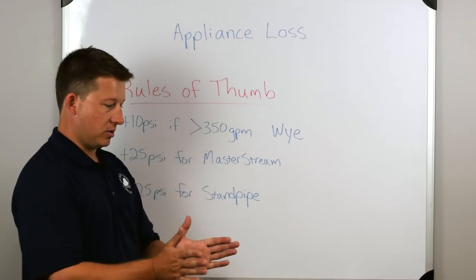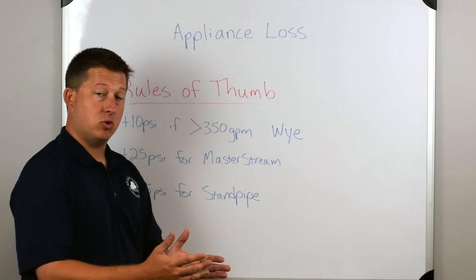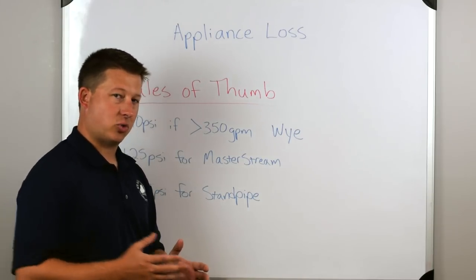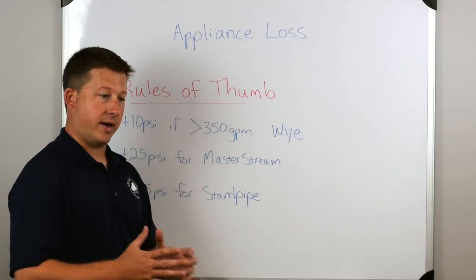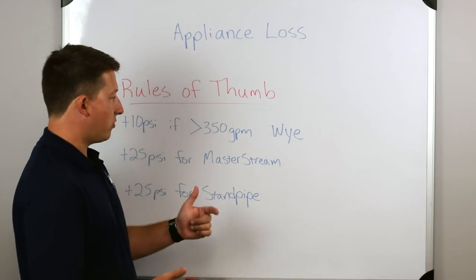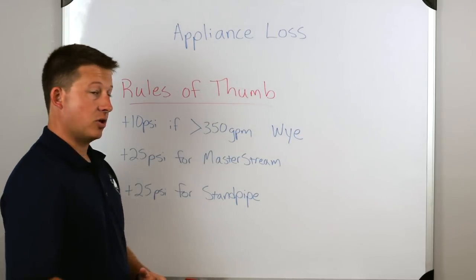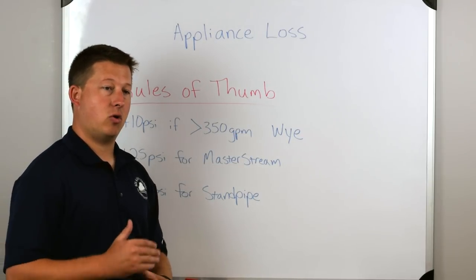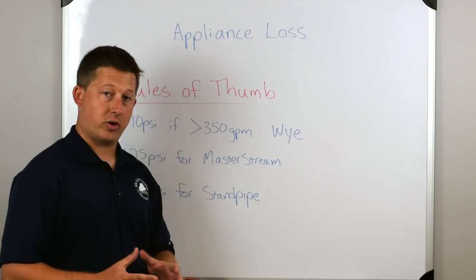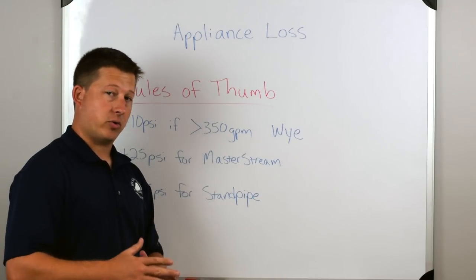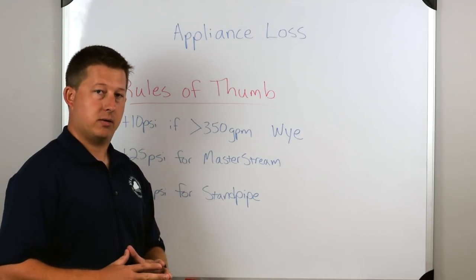The reason that is, if we're only flowing 100 gallons a minute through a wye, then there's not very much turbulence or friction created because the water is easily moving through the wye. When we try to push 350 gallons a minute through that wye, it splits and we create a lot of turbulence and friction within that device or within that appliance. So you only add 10 PSI if you go over 350 gallons a minute. That's a rule of thumb. So if you're under 350 gallons a minute, you don't worry about it. You don't add anything.